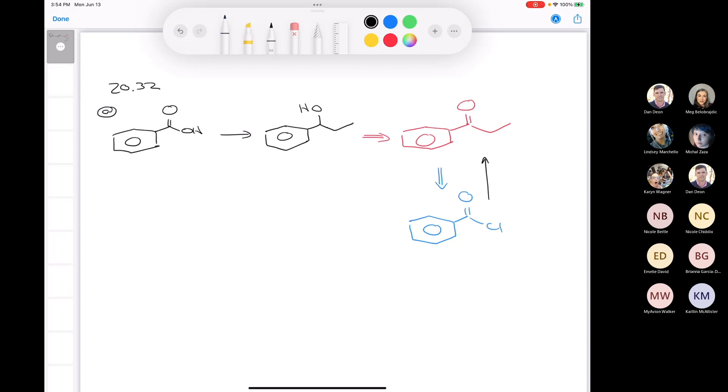Using a Gilman reagent. So, Gilman reagent, R2 cuprate, so in this case, it would be this. That can go directly to the ketone from the acid chloride, right?